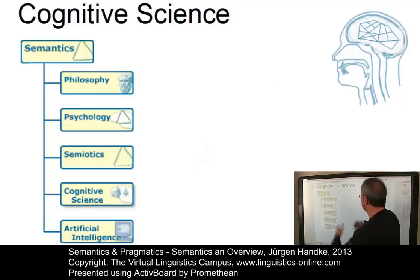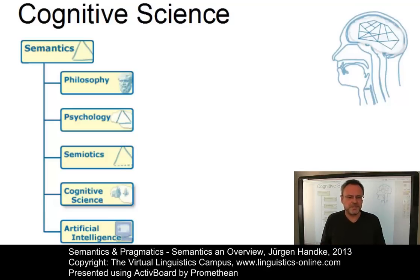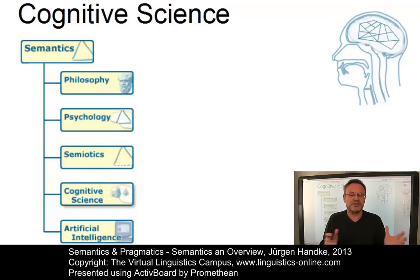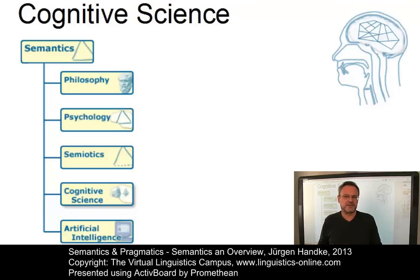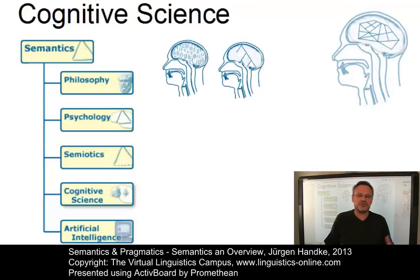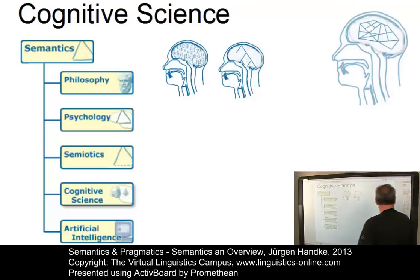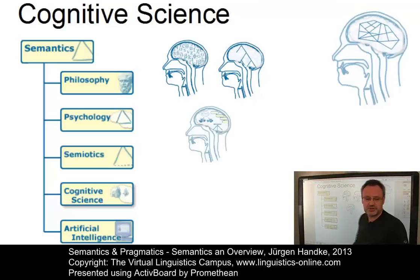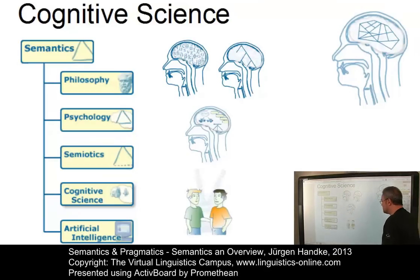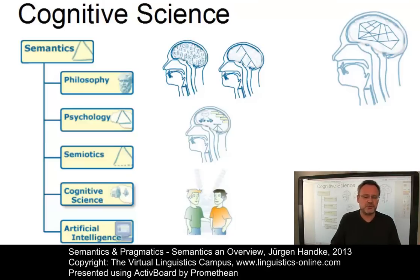Cognitive science is an interdisciplinary approach bringing together what is known about the human mind from linguistics, psychology, computer science, and philosophy. It seeks to answer the following central questions: What sources of knowledge do humans utilize in speaking, hearing, and thinking? How is knowledge organized and represented in the human mind? And how is this knowledge put to use, and what cognitive processes underlie the application of this knowledge?